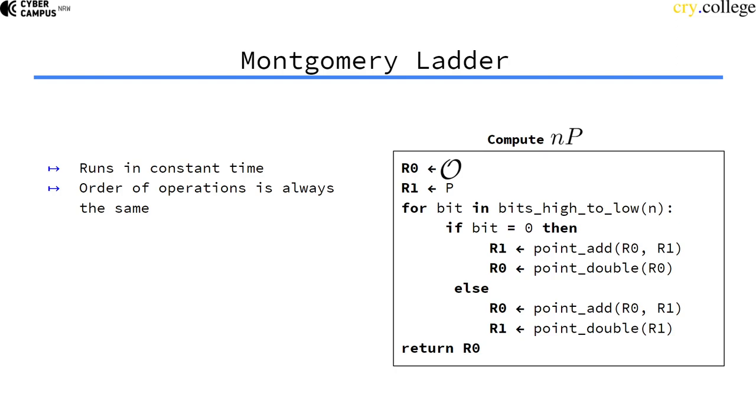It still goes through the bits, from the highest bit to the lowest bits, and checks if the bit is 0, but if it's 0 or not, it will always do first an add, and then a double step.